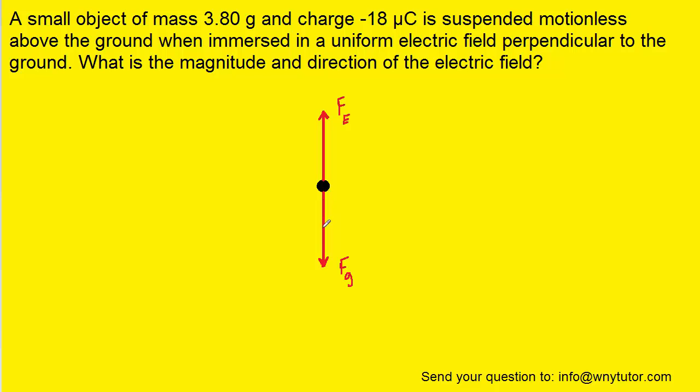Now the first force is the familiar force of gravity that is acting downward on the mass, and then we have a force that is introduced in this chapter known as the electric force, and we know that the electric force has to be pointing upward in order to keep this mass suspended motionless in the air.